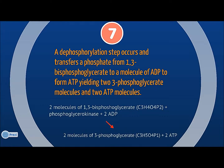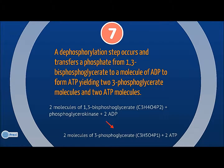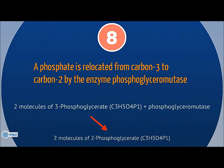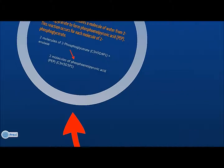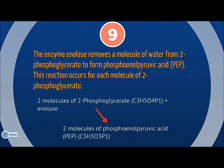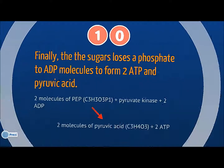Then the enzyme phosphoglyceromutase relocates a phosphate from carbon-3 to carbon-2. Next, the enzyme enolase removes a molecule of water from 2-phosphoglycerate to form phosphoenolpyruvic acid, known as PEP. This reaction occurs for each molecule of 2-phosphoglycerate. Finally, the sugar loses a phosphate to ADP molecules to form 2 ATP and pyruvic acid.